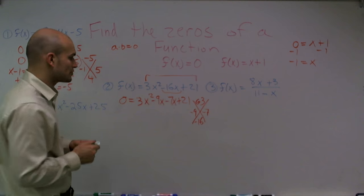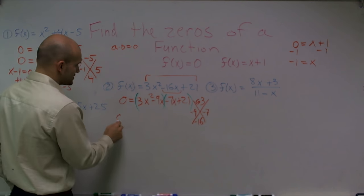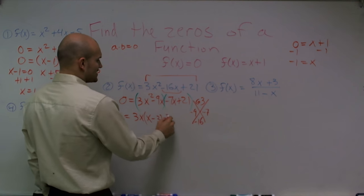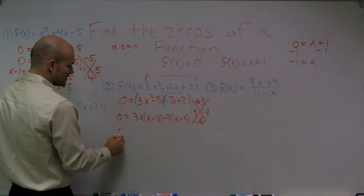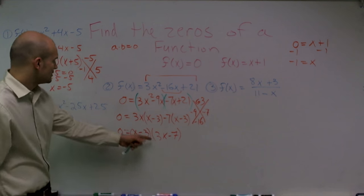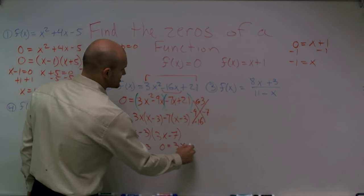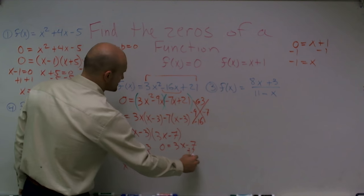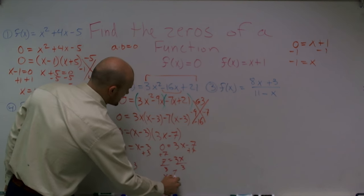Then I factor by grouping — group the first two terms and the last two terms. I factor out 3x from the first group, leaving x minus 3. Then I factor out negative 7, leaving x minus 3. So 0 equals x minus 3 times 3x minus 7. Setting each factor equal to 0: x minus 3 equals 0 gives x equals 3, and 3x minus 7 equals 0 gives x equals 7 thirds.